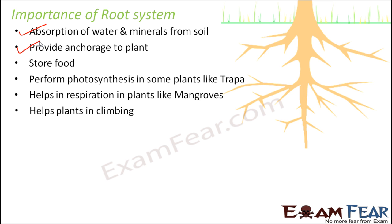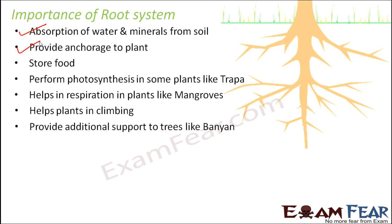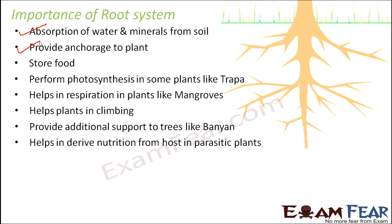Roots help plants in climbing — in many plants, roots are modified into climbing structures, where they secrete sticky substances that attach to a surface, allowing the plant to grow over it, similar to stem tendrils or leaf tendrils. Roots also provide additional support to large trees like banyan, where prop roots develop and provide extra support.